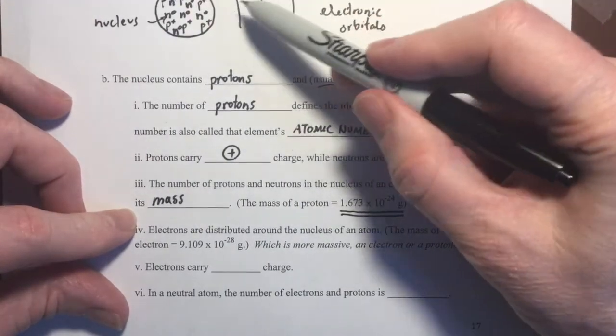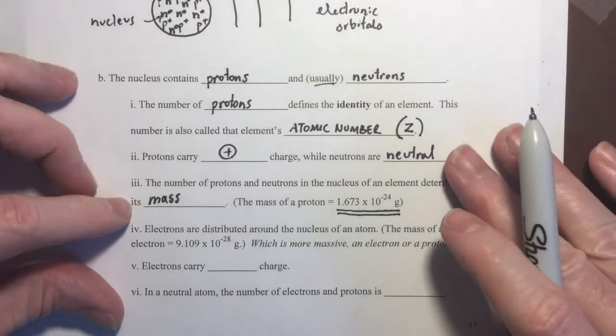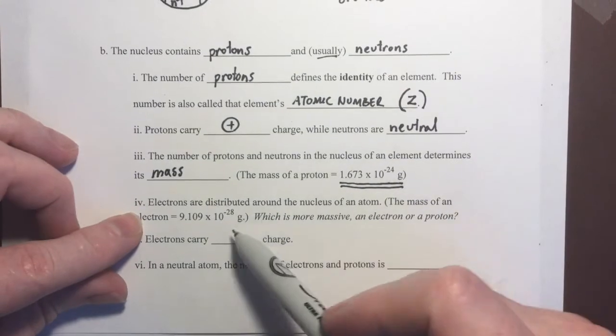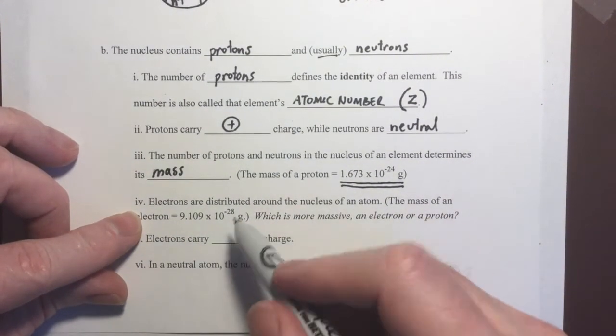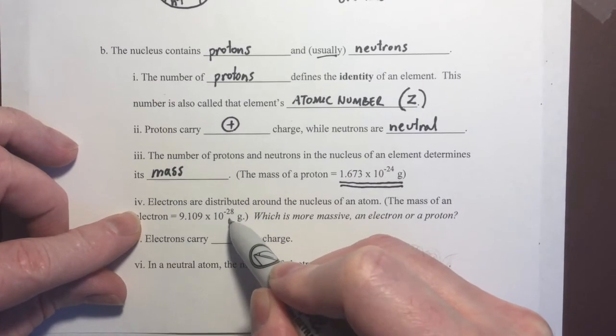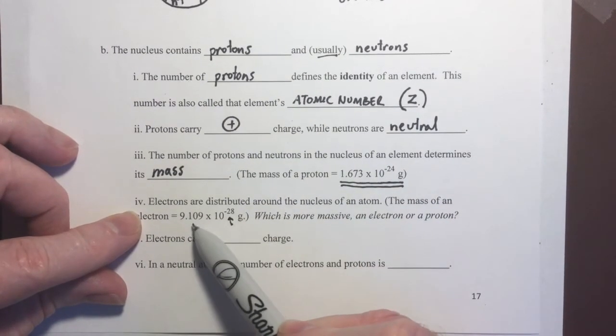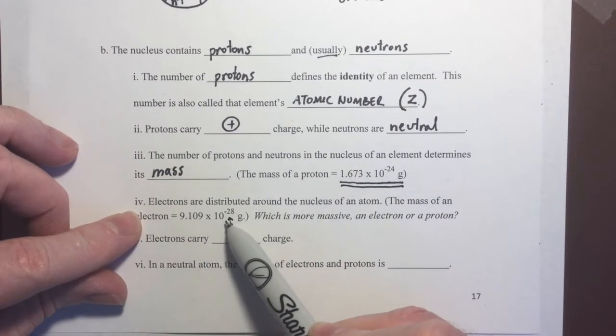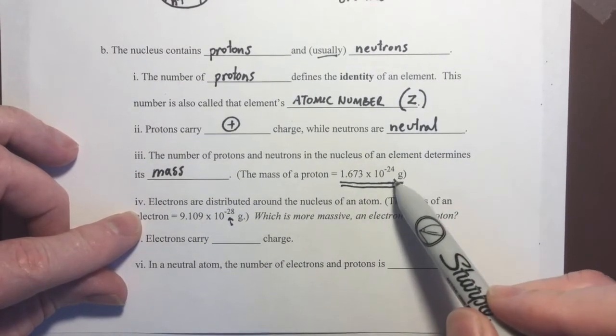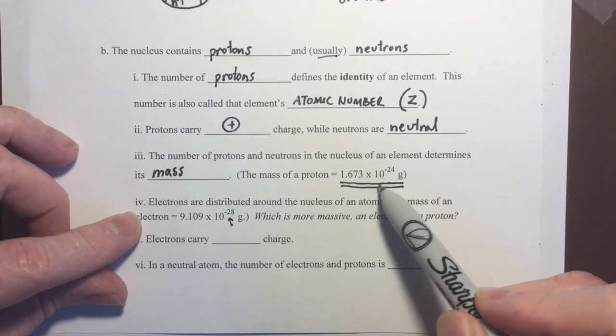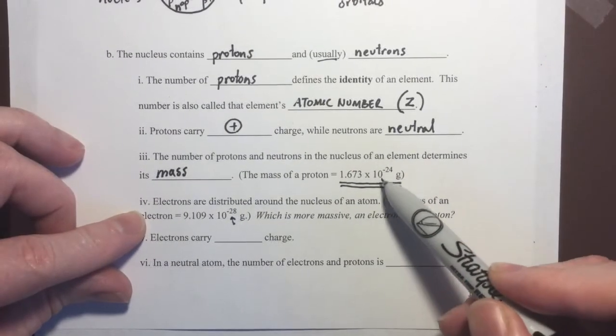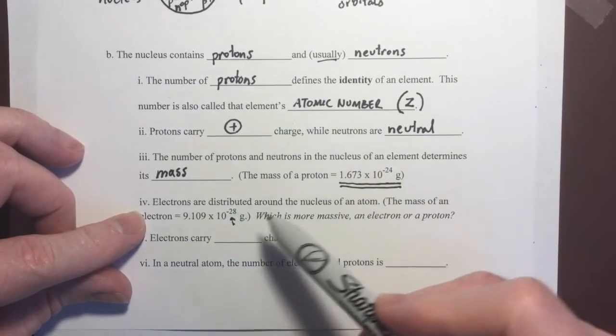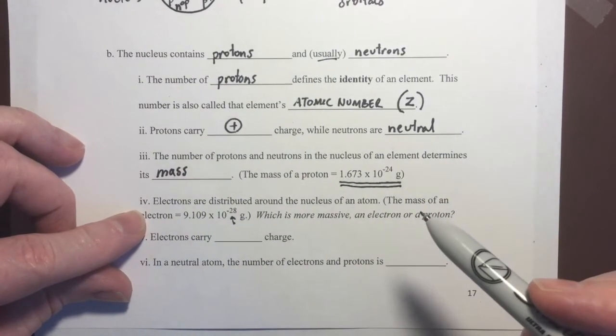Now, what about the electrons? Don't they have mass? Yes, they do. And these electrons that are distributed around the nucleus of an atom, they do have mass, but notice what their mass is. It's 9.109 times 10 to the negative 28 grams compared to 10 to the negative 24 grams. So, a proton is about a thousand times more massive than an electron.